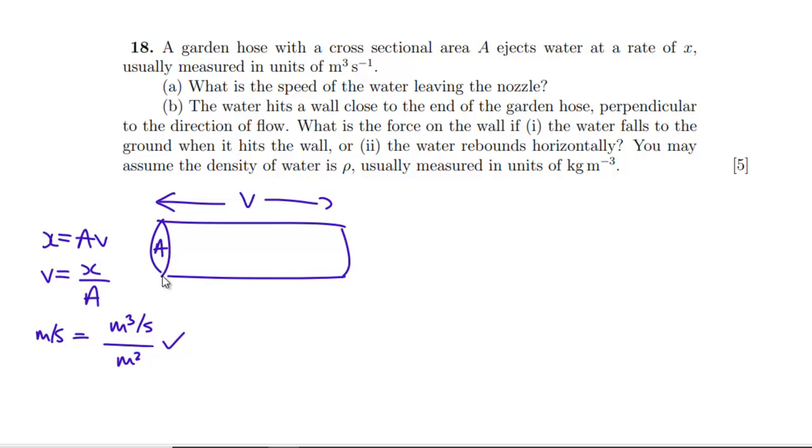Now, the water hits a wall close to the end of the garden hose. So let's say it's coming out this way. It goes whap into a wall perpendicular to the direction of flow. What is the force on the wall if the water falls to the ground when it hits the wall or when it rebounds horizontally? Well, we know that the second one is going to be double the first one because we've got double the momentum. So the second part is straightforward. And they're telling us to use density in our answer. So we'll have more unit analysis probably going on here.